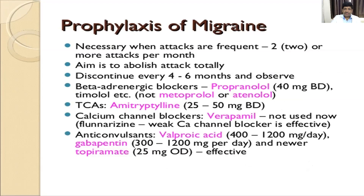For prophylaxis of migraine, when there are severe migraine attacks, further attacks should be prevented. Drugs like propranolol or timolol can be given, but metoprolol or atenolol should not be given. Tricyclic antidepressants like amitriptyline can be given, calcium channel blockers like verapamil, and anticonvulsants like valproic acid, gabapentin, and topiramate can also be given.